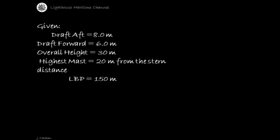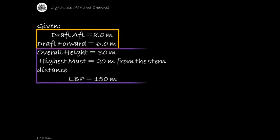Let us suppose that the vessel is not in even keel. Given: draft aft = 8.0 meters, draft forward = 6.0 meters, overall height = 30 meters, highest mast distance = 20 meters from the stern, length between perpendiculars = 150 meters. These can be obtained from the loading condition of the vessel, ship's particulars, or ship's construction details.